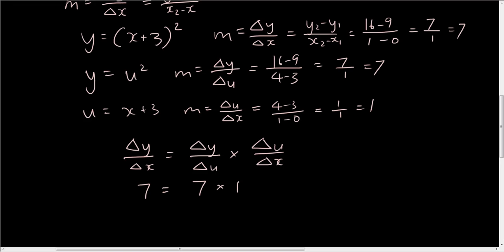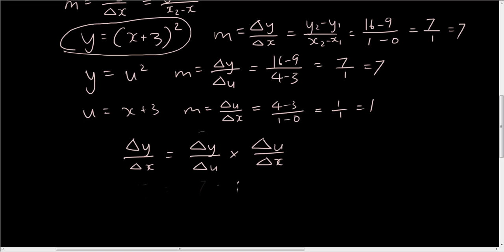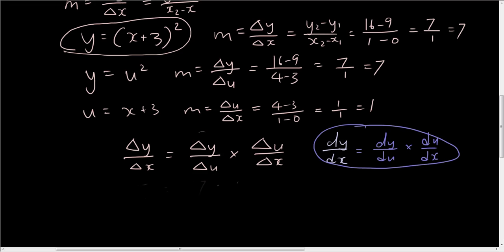So the gradient of y — the rate of change of y with respect to x — is the same thing as the rate of change of y with respect to u times the rate of change of u with respect to x. But this still is not the same as the chain rule, because the chain rule states that dy over dx is equal to dy over du times du over dx. So how is this the same?